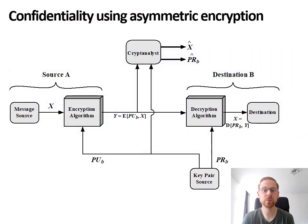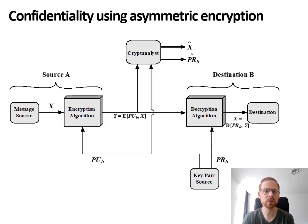Because of its use of both a public and a private key, asymmetric encryption is more versatile than symmetric encryption. Just like symmetric encryption, it can be used to provide confidentiality, but it can also provide authentication. Let's start with taking a look at how to provide confidentiality of messages using asymmetric encryption. The process is somewhat similar to symmetric encryption, but due to the use of two different keys, there are some small differences.